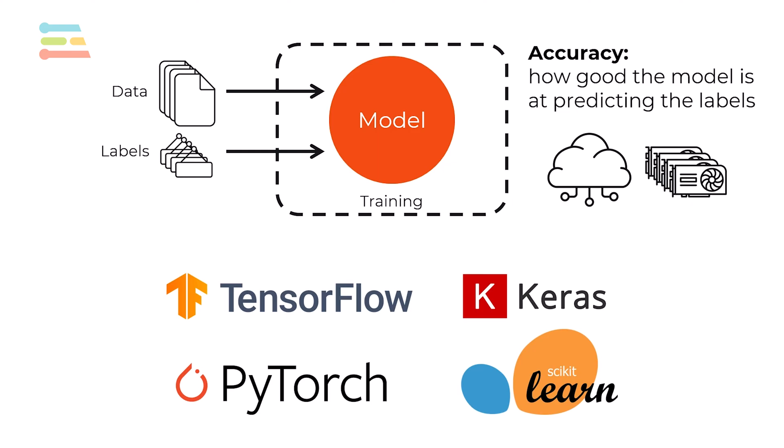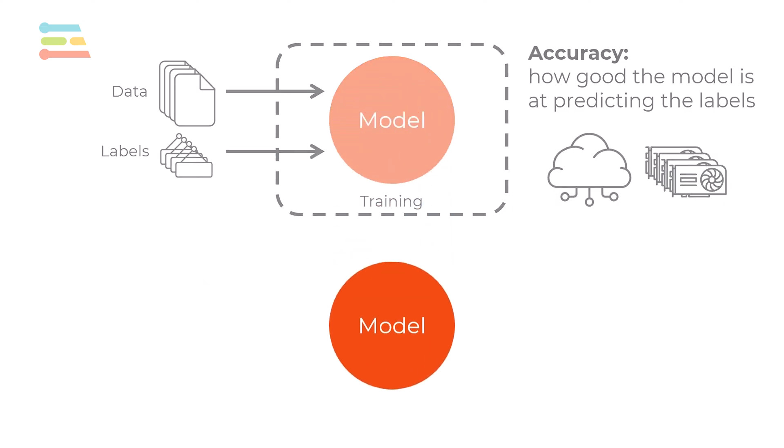Once you are happy with the performance of your model, you then deploy it to your end device. From there, you send live, new data to your model where it tries to predict the label or value based on the rules established during training. This process of using the model to identify new, never-before-seen data is known as inference.